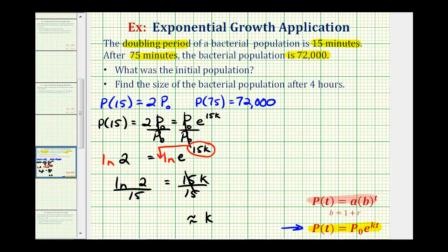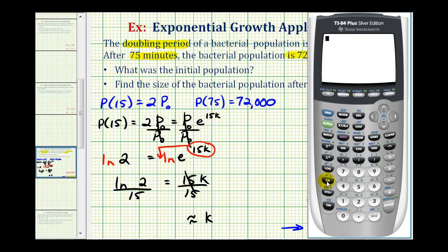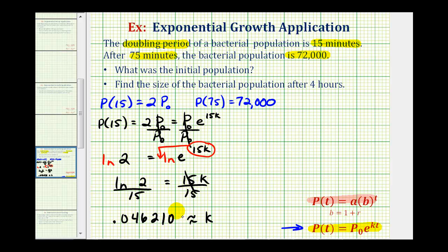Going to the calculator, we compute natural log two divided by 15, including six decimal places. So k is going to be approximately 0.046210. This means we now know that p of t must equal p sub zero times e raised to the power of 0.046210 times t.